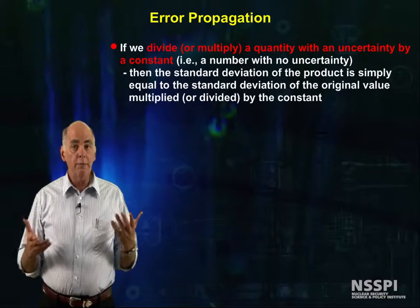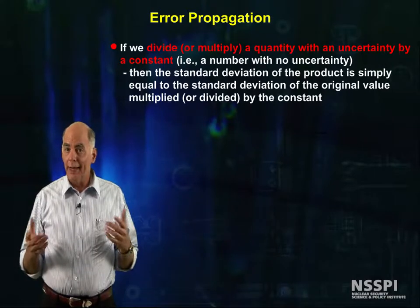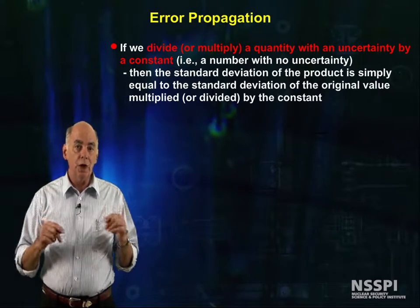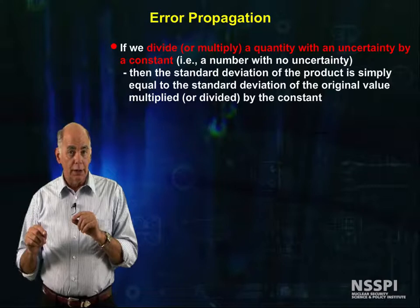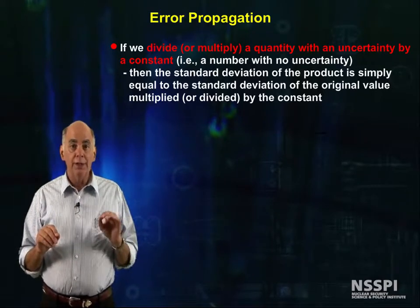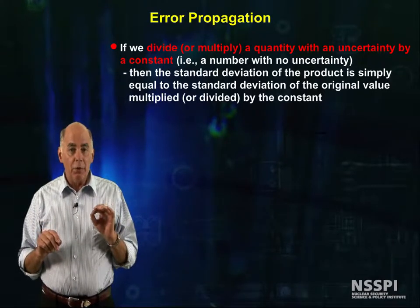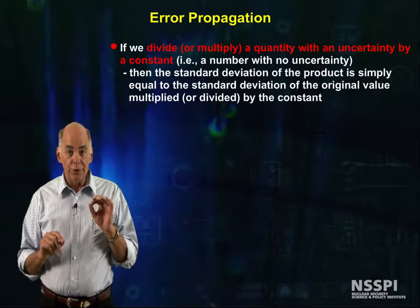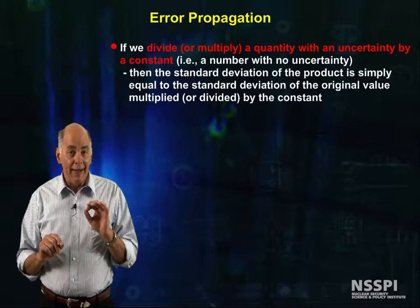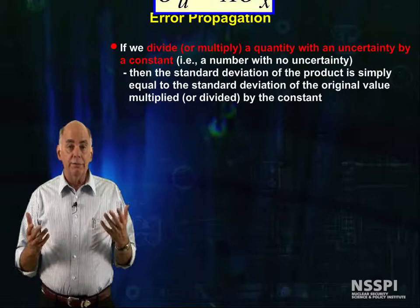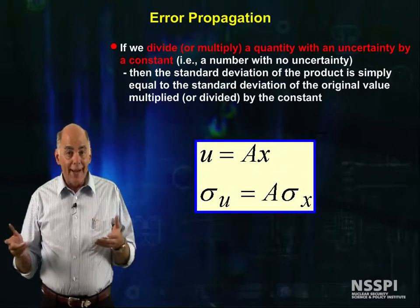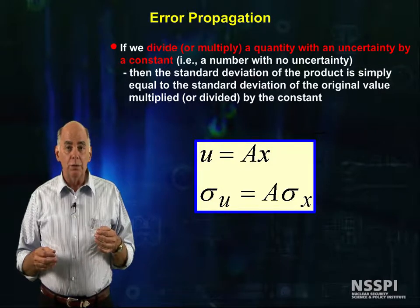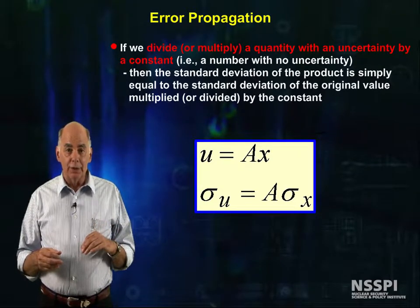What if we multiply a count by a constant? If we divide or multiply a quantity with a known uncertainty by a constant — that is, a number with no uncertainty — then the standard deviation of the product is simply equal to the standard deviation of the original quantity multiplied or divided by the constant. Thus, if u equals ax where a is a constant, then the standard deviation of u is equal to a times the standard deviation of x.